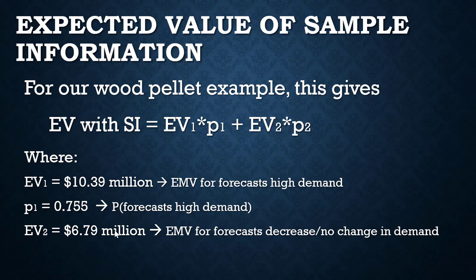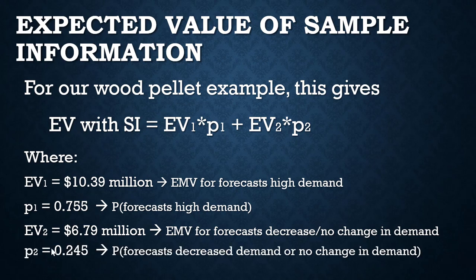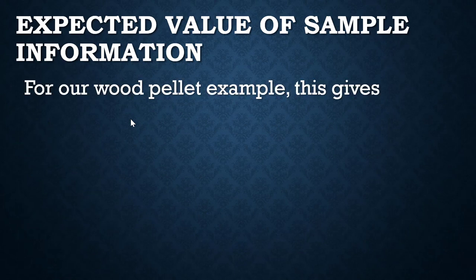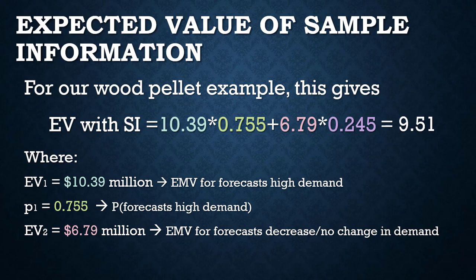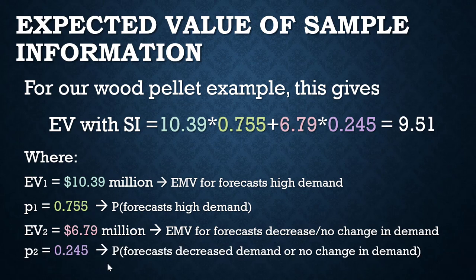The second expected value is when the forecaster forecasts not high demand — either no change or a decrease — which gives 6.79 million. The probability of forecasting not high demand is 24.5%. Let's plug all of this in to get the expected value with sample information.